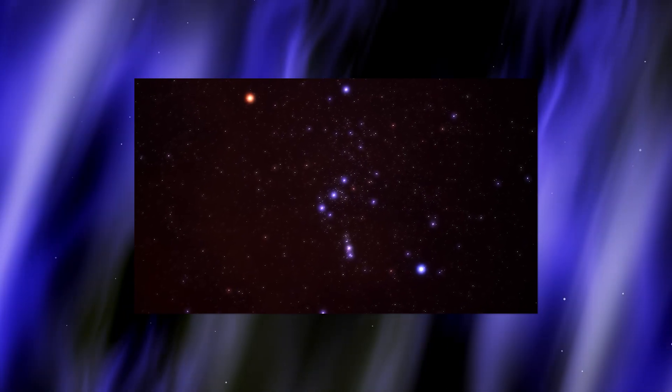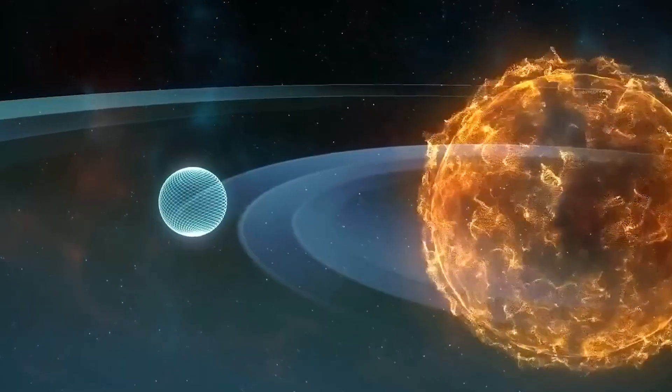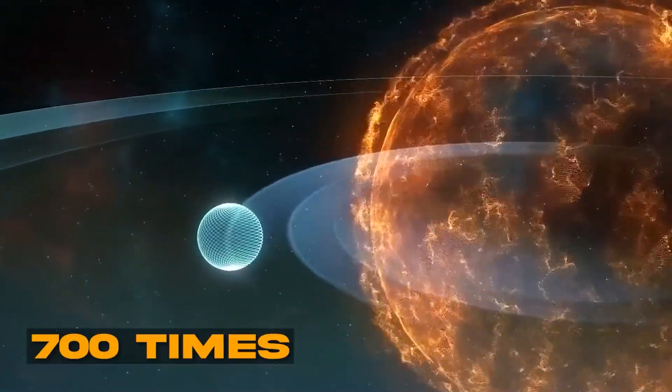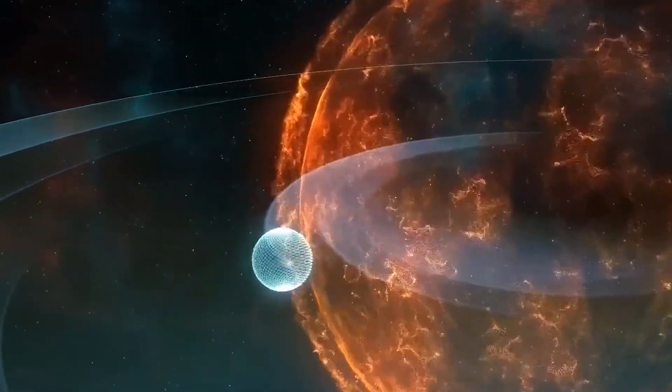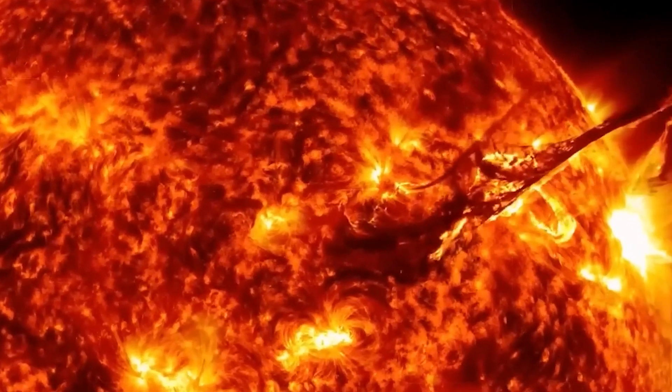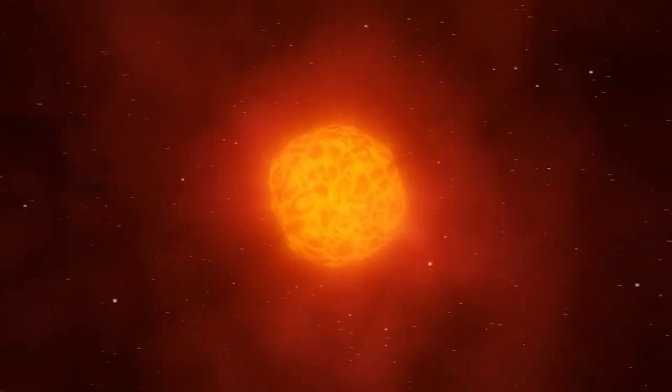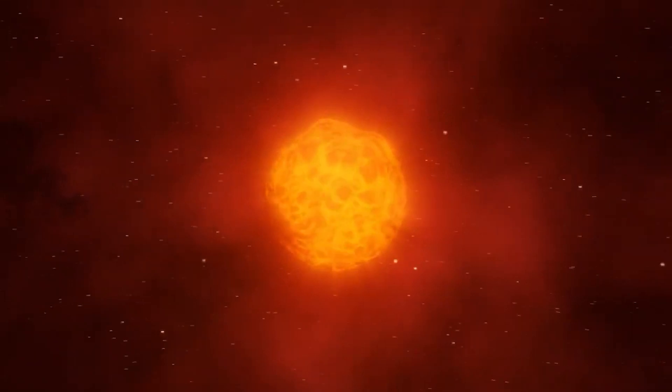You see, Betelgeuse is no ordinary star. Its colossal size is truly mind-boggling, with a diameter about 700 times the size of the Sun, or 600 million miles. To put it into perspective, if we were to place Betelgeuse at the center of our solar system, its outer reaches would extend beyond the orbit of mighty Jupiter.